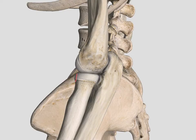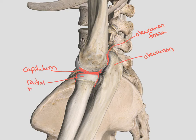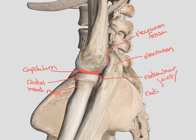Looking from the lateral side — we know it's lateral because we can identify the radius on the lateral side. We find the olecranon, as well as the olecranon fossa. Here we can see the capitulum, which was that articular surface of the humerus, as well as that radial head and neck. Here we can nicely see the radial ulnar joint and that radial groove that sits in the ulna. We can also see our lateral epicondyle.